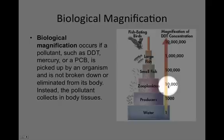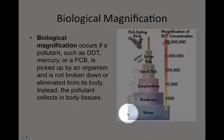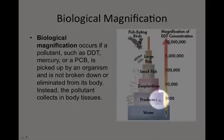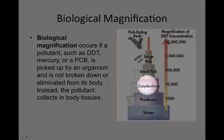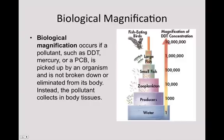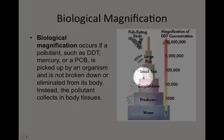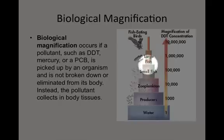10,000 might not seem like a lot and it's probably not having a big effect yet, but it's really starting to build up. If you look at the pictures here, you can see how spread out the red dots are in water — they're much closer in producers, and by the time we get to the zooplankton that eat producers, they're much more densely packed. Zooplankton have predators and get eaten by small fish, and every zooplankton a small fish eats, the small fish takes in every single bit of that pollutant.